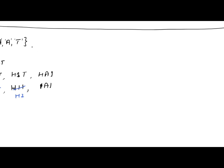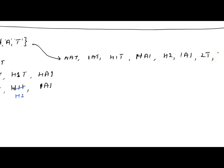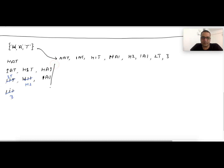If the input character array is h80 then the full output should be: h80, then 1at, 1a1, h1t, h11, h2, 1a1, 2t, and finally 3. This should be the complete output.